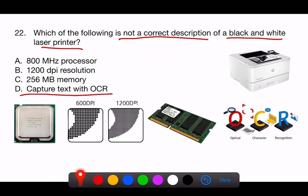The other options, A, B, and C, are plausible specifications for a black and white laser printer. A. 800 MHz processor. Printers come with built-in processors to handle the print commands and manage the printing process. An 800 MHz processor in a printer is reasonable and would be responsible for processing the print jobs efficiently.